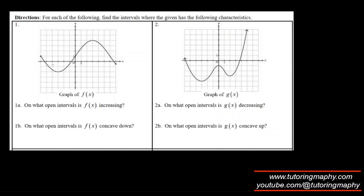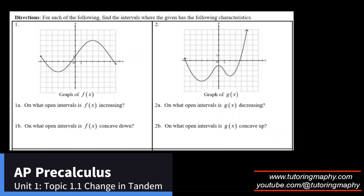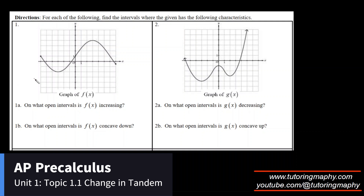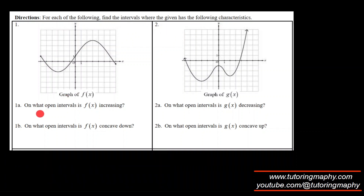Let's get started with Topic 1.1 review of AP Calculus. For each of the following, we have to find an interval with the given characteristics. For example, in question number one, they're asking on what intervals is f(x) increasing. Increasing means it's a climbing function — with increasing values of x, y should also be increasing.